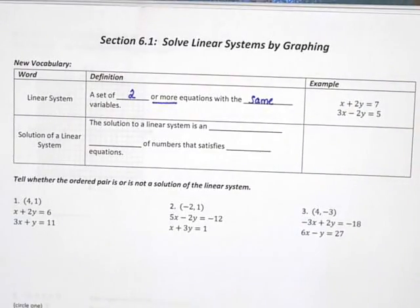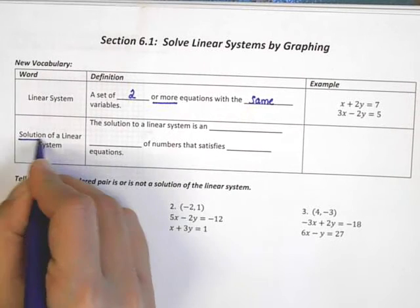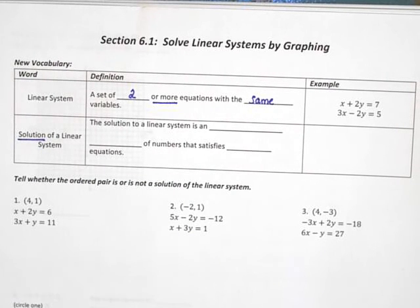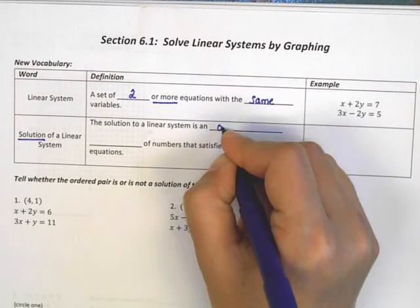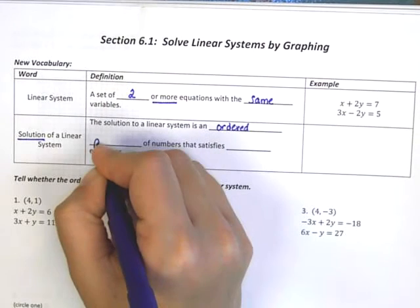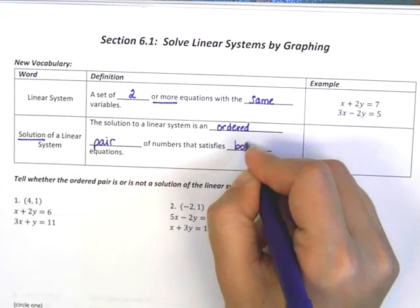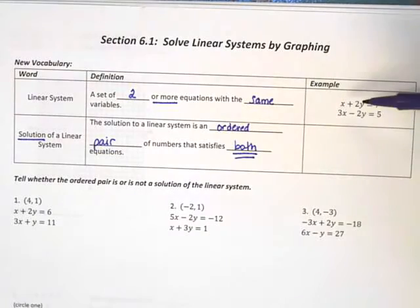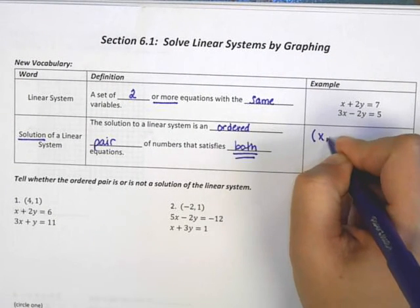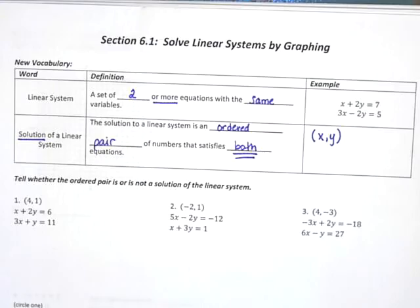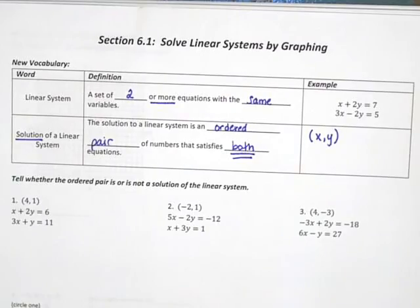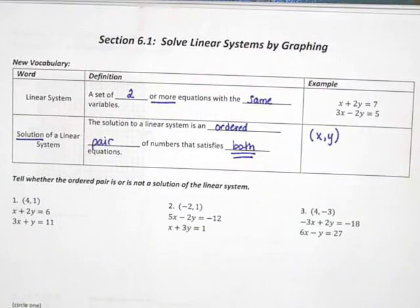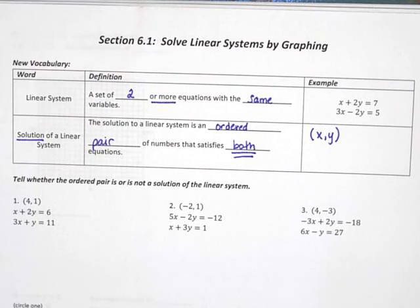Now we are going to be learning how to solve systems of equations. So what does it mean to find the solution? The solution to a linear system is an ordered pair of numbers that will satisfy both equations. The solution to this system would be an ordered pair that makes both equations true. Let's take a look at a couple problems where we need to decide whether the given ordered pair is or is not a solution.